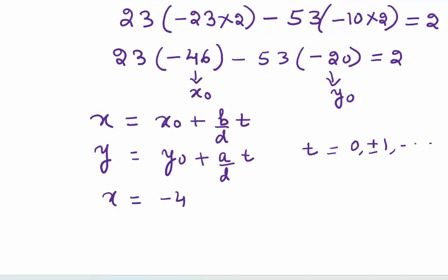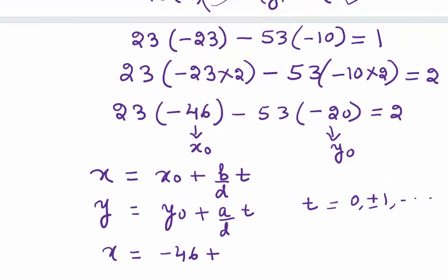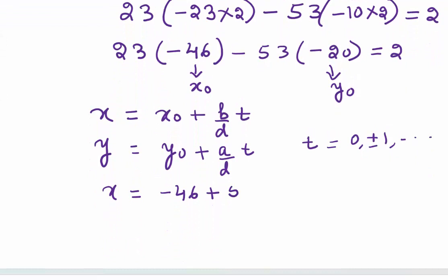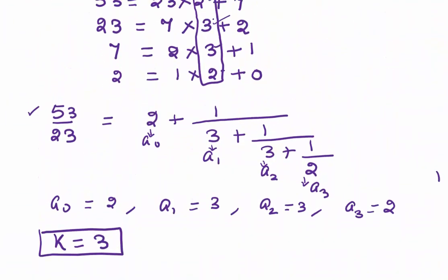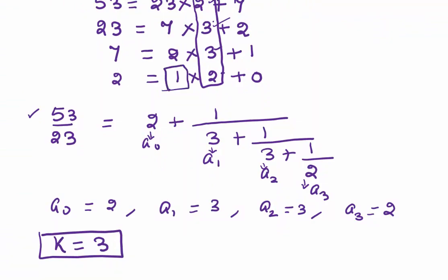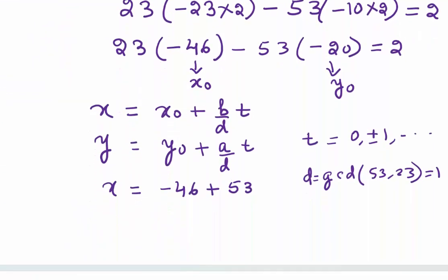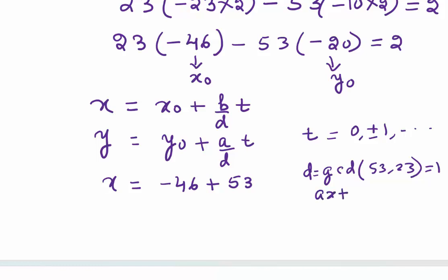Let's put the values. x will be, what is x0? -46. b value from the equation is 53. d is the GCD, which is 1, or GCD of 53 and 23, which is 1. We found that in the Euclidean algorithm also. So x = -46 + 53t.